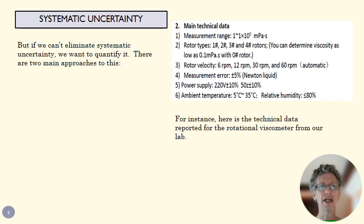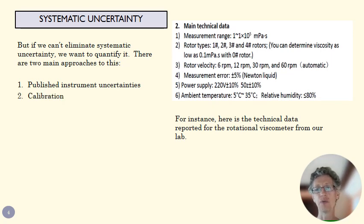If we can't get rid of systematic uncertainty, we want to quantify it. And so we have to think about how to quantify that. We can do that in a couple of ways. One is to use published instrument uncertainties. And you can see an example of that over here. This is actually from the manual for our rotational viscometer. Or we can do a calibration.